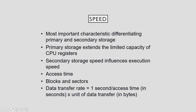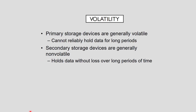The data transfer rate is expressed in seconds multiplied by the unit of data transfer expressed in bytes. For example, the data transfer rate for a primary storage device with 15 nanoseconds access time and a 64-bit word data transfer unit is calculated as: one second divided by 15 nanoseconds times 64 bits, which equals approximately 5,333,333,333 bytes per second.